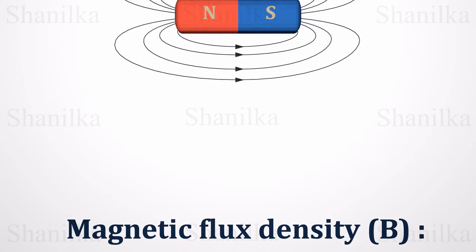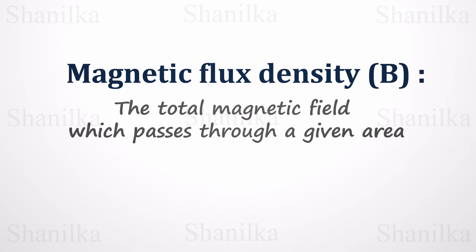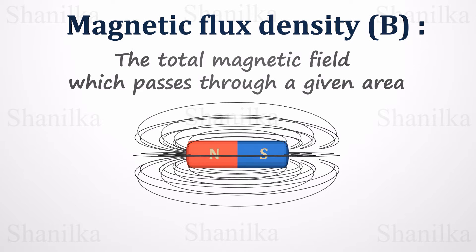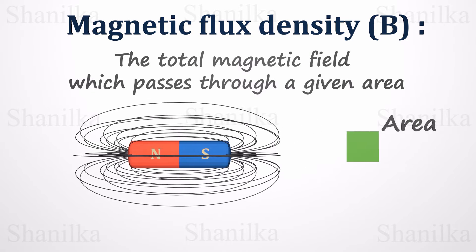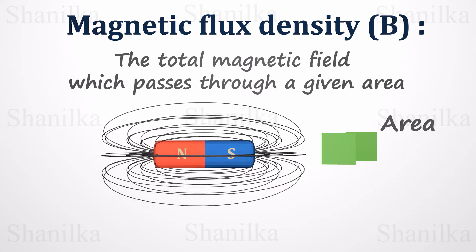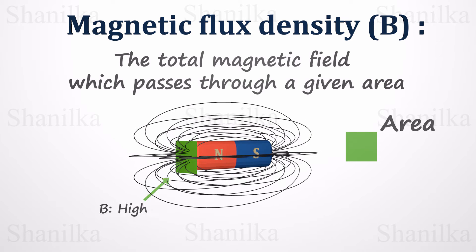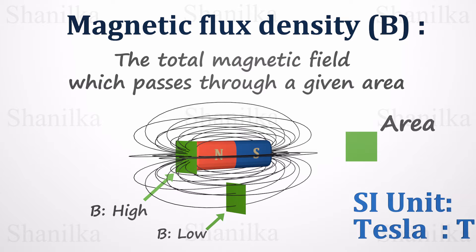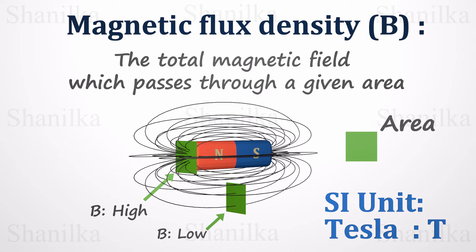The total magnetic field which passes through a given area is called the magnetic flux density, denoted using the letter B. If we consider a bar magnet, the magnetic field lines near the pole end pass through an area in greater numbers than elsewhere. The SI unit of magnetic flux density is Tesla, which is a measurement of the magnetic field's strength.